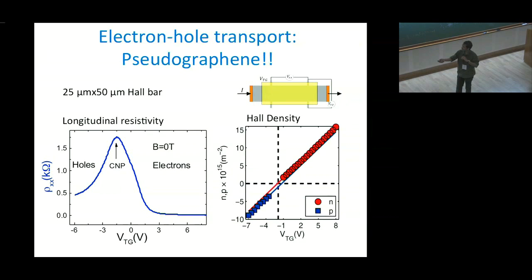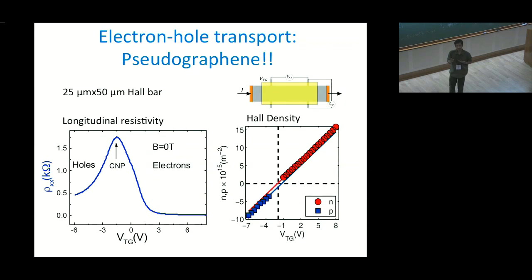As you reduce the gate voltage towards the hole side, there is a peak and then it goes down — similar to a graphene field-effect transistor Dirac point. What is happening is that you are reducing the electron density until you reach a point where electron and hole density are equal and the effective density is zero. That is why the resistance is maximum — this is called the charge neutrality point.